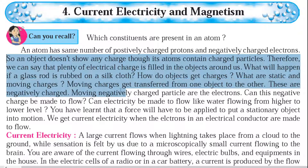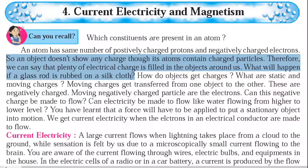We can say that plenty of electric charge is present in the objects around us. When a glass rod is rubbed on a silk cloth, we can see static electricity — the glass rod rubbed on silk cloth produces electric charge.